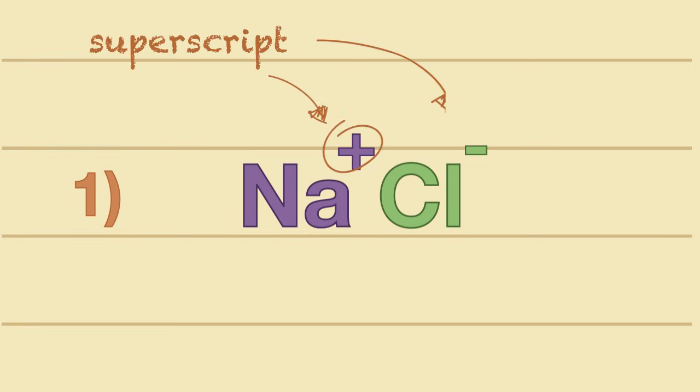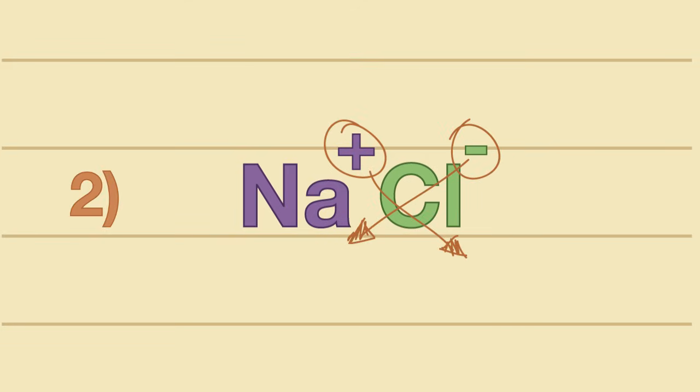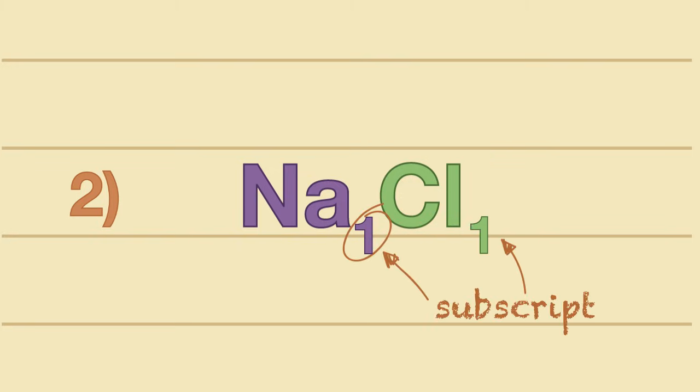Let's grab a piece of paper and a pencil and work on this example. Write down the ions side by side along with their charges. Remember that the charges are written in superscript. Now circle the charges and crisscross them, just like how it's done here. We will bring the charges down so that they are in subscript.